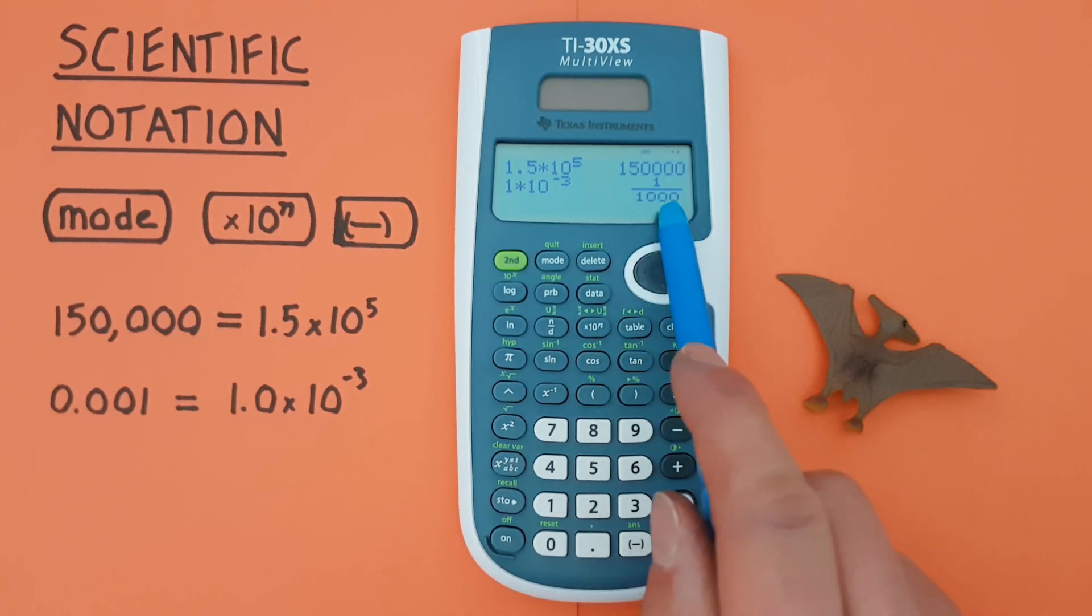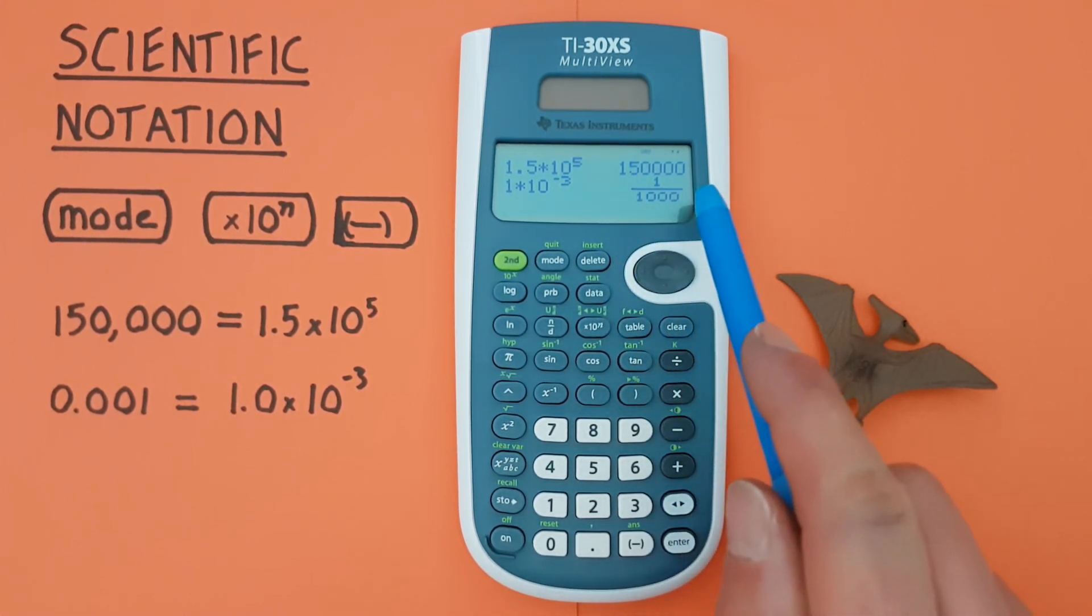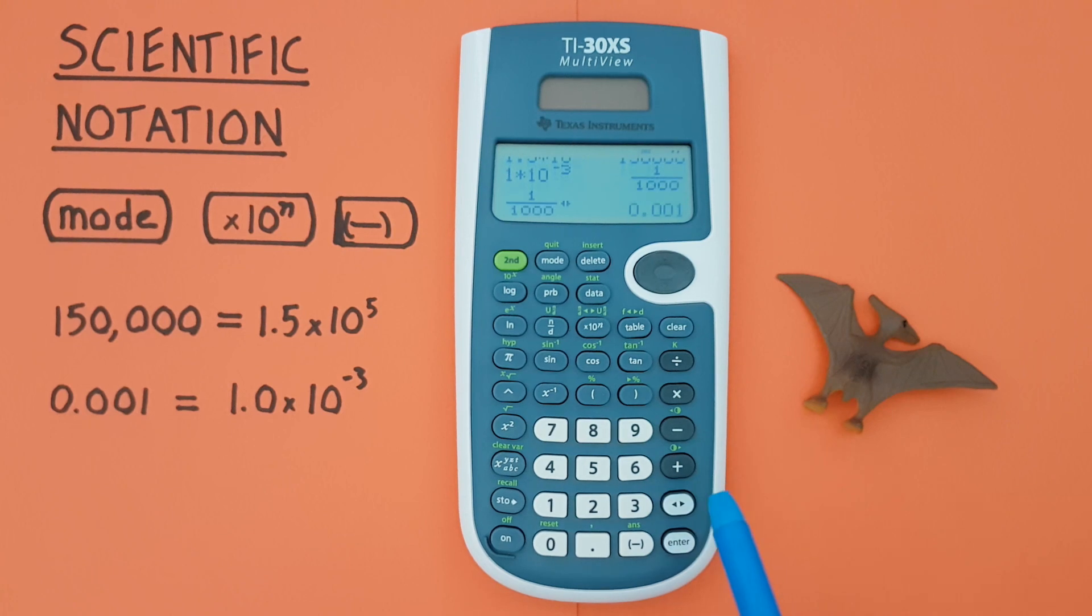And this calculator likes to give us fractions. So this initially will give us 1 over 1000. But we can convert that with the toggle key down here, which is the arrow going left and right. If we press that, we see that converts to our decimal.